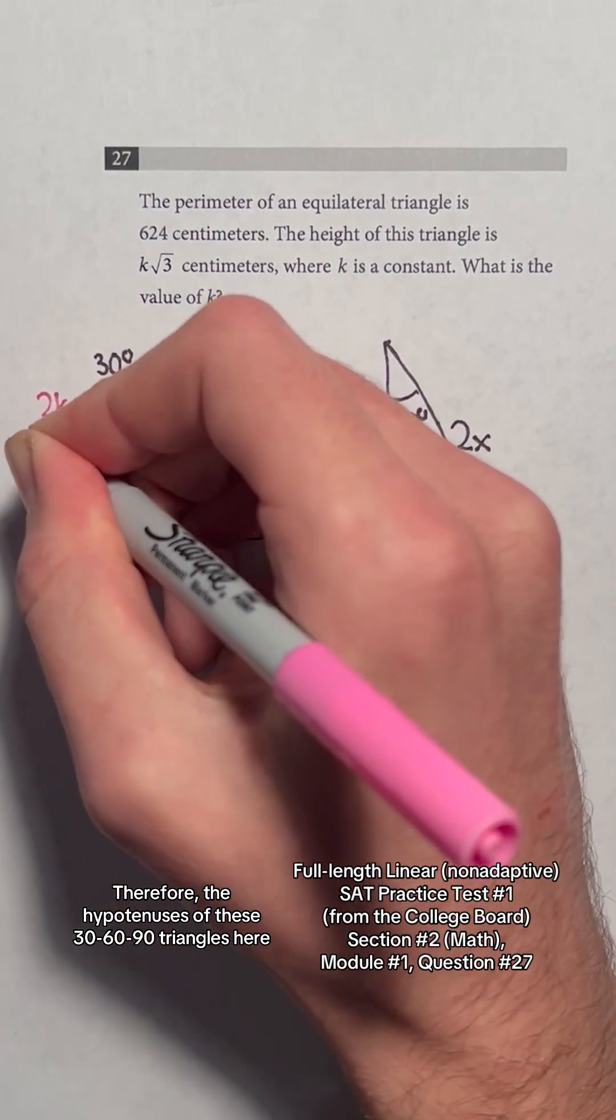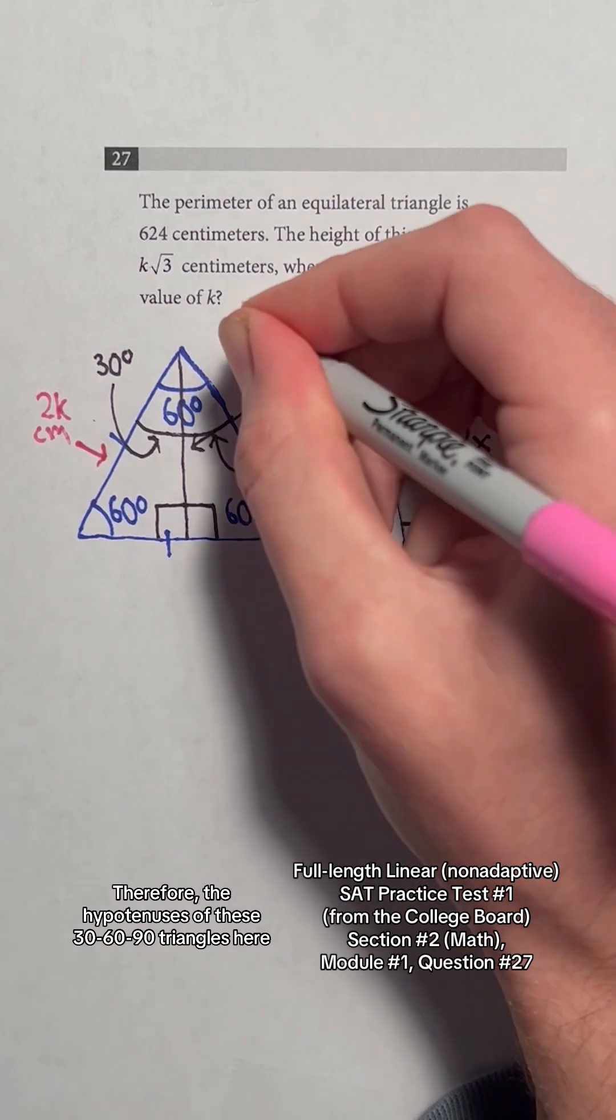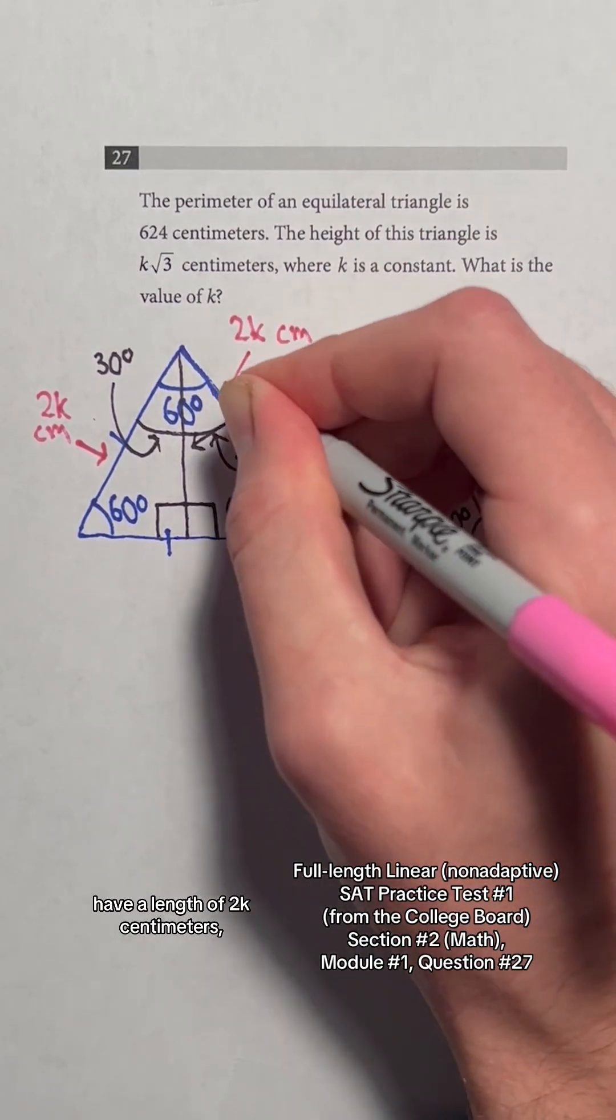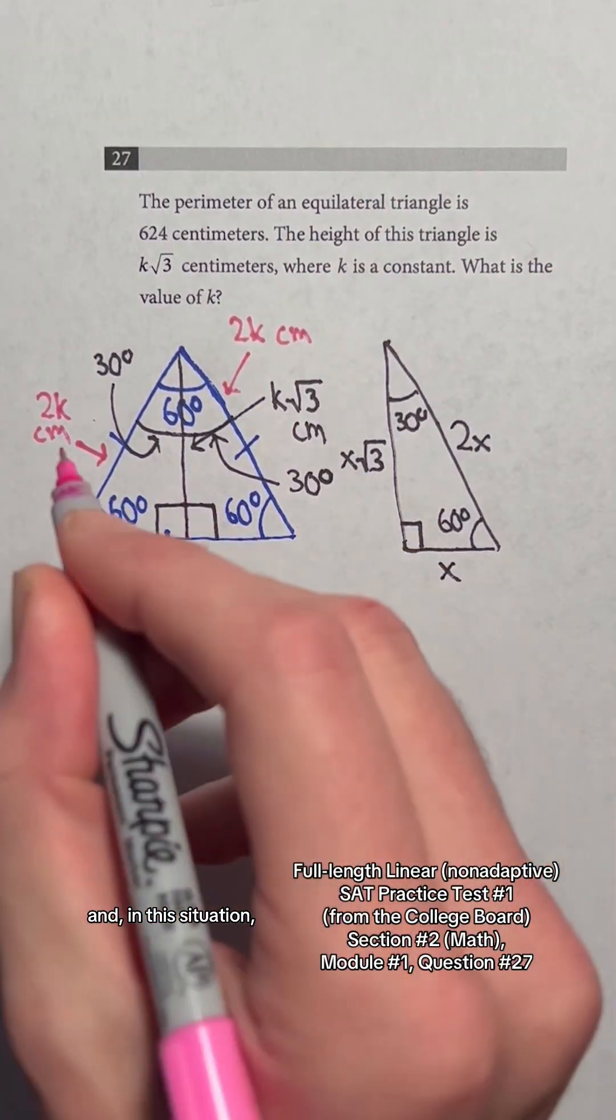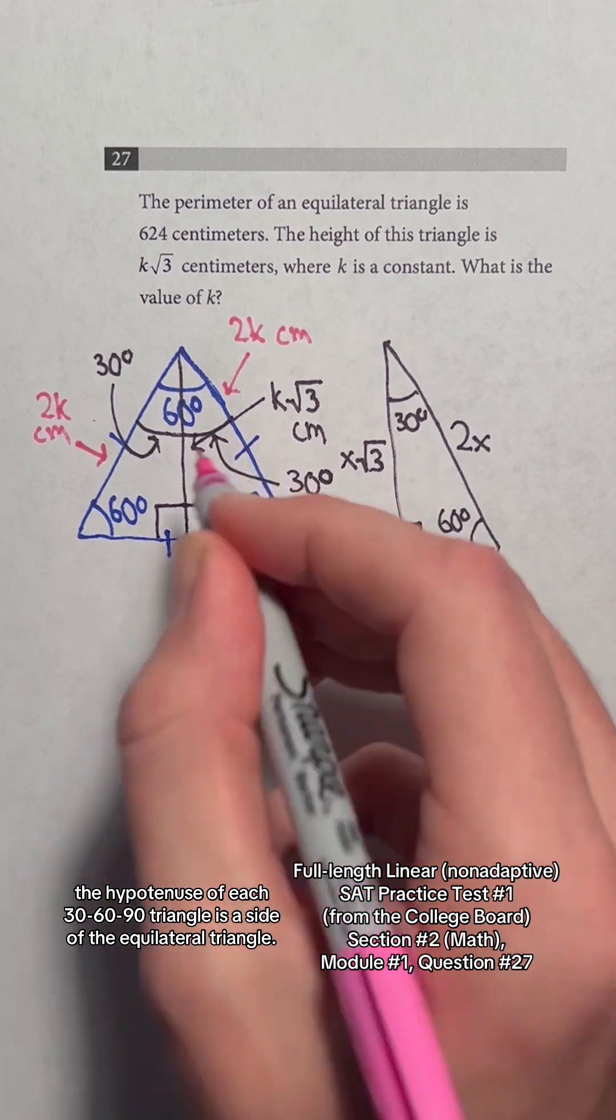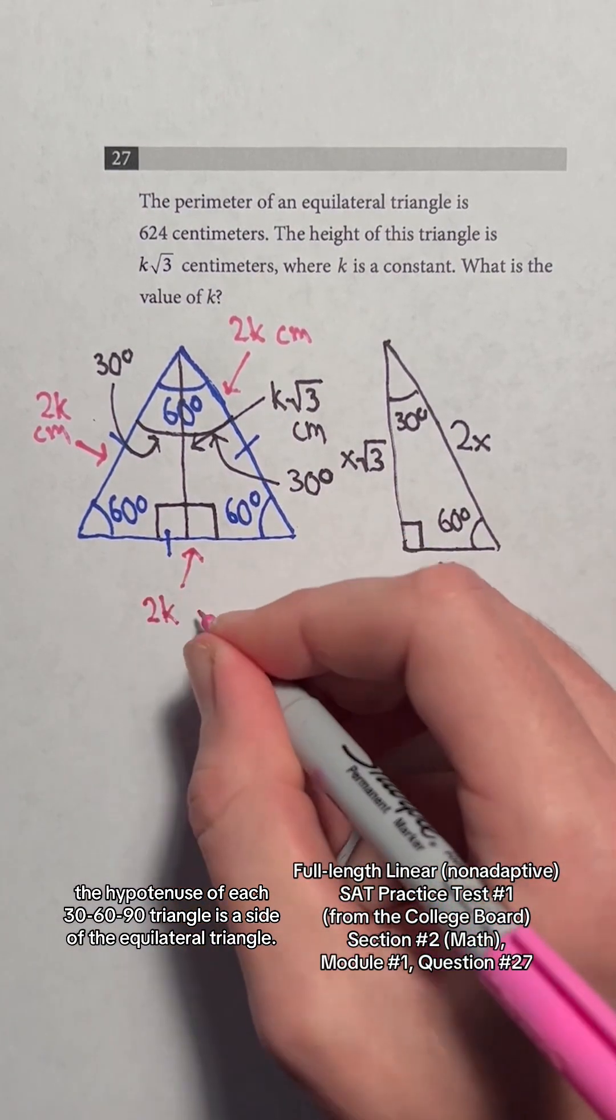Therefore, the hypotenuses of these 30-60-90 triangles here have a length of 2k centimeters. And in this situation, the hypotenuse of each 30-60-90 triangle is the side of the equilateral triangle.